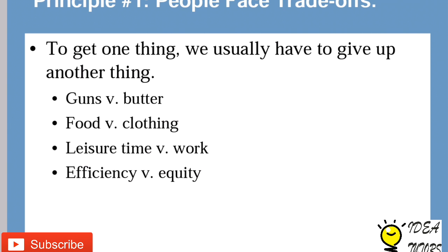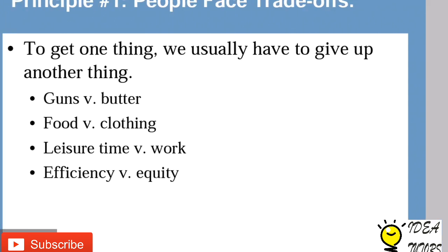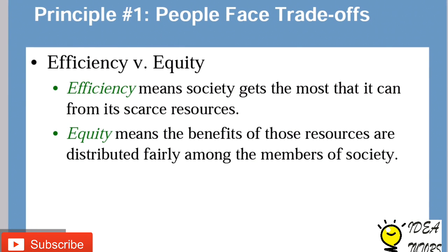There is a choice we need to make. Efficiency versus equity: efficiency means society gets the most it can from its scarce resources — we use limited resources in such a way that we get maximum benefit possible. Equity means that the benefits of those resources are distributed fairly among members of society — the benefit fetched from these limited resources is to be distributed equally among all people of society.